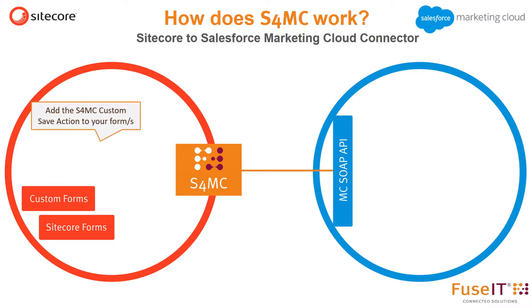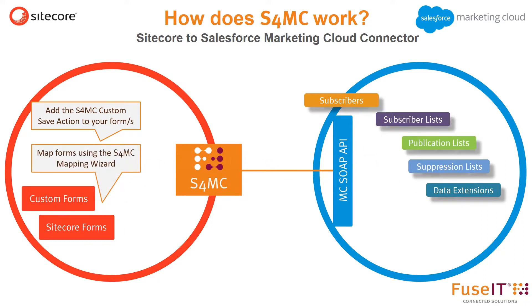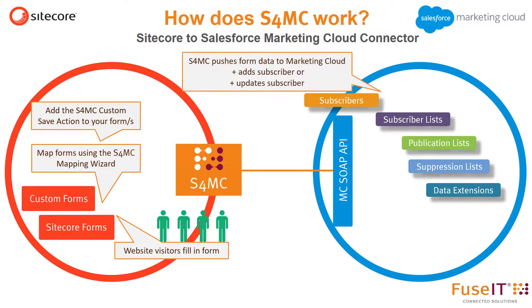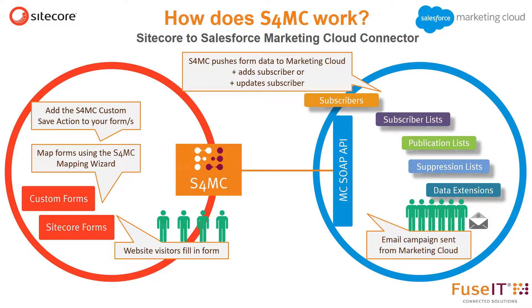To set up, add the AS4MC custom save action to your Sitecore form or forms. Then map the forms in Sitecore to Marketing Cloud using the AS4MC mapping wizard. When visitors fill in the form on the website, AS4MC pushes the form data to Marketing Cloud, either adding a subscriber or updating an existing subscriber based on the settings configured in the mapping wizard. Email campaigns, for example, can then easily be sent from Marketing Cloud to the subscribers collected or updated from the Sitecore forms.